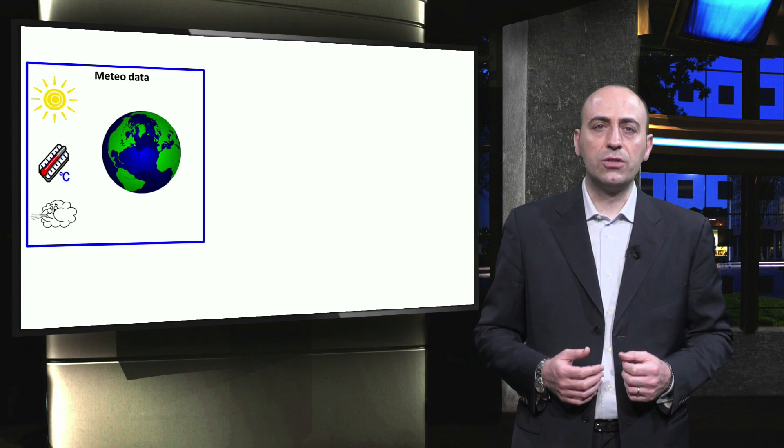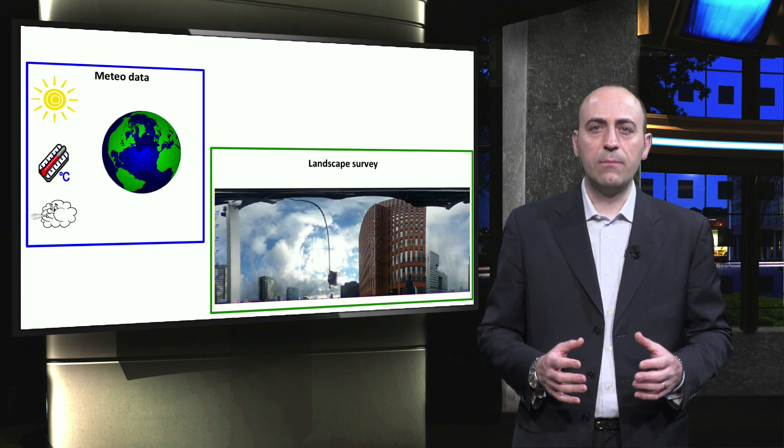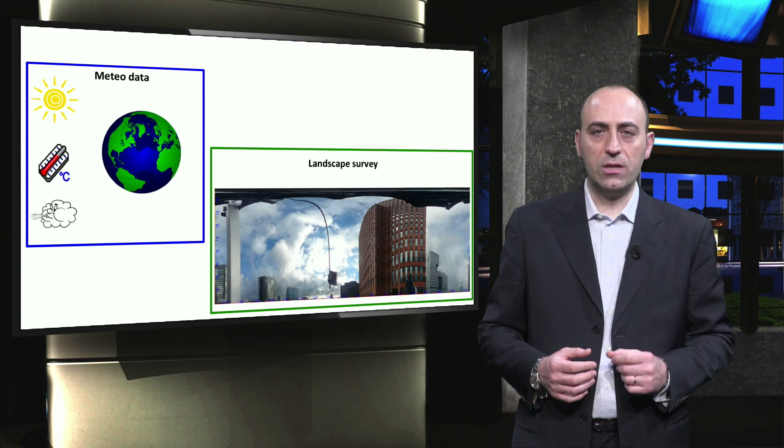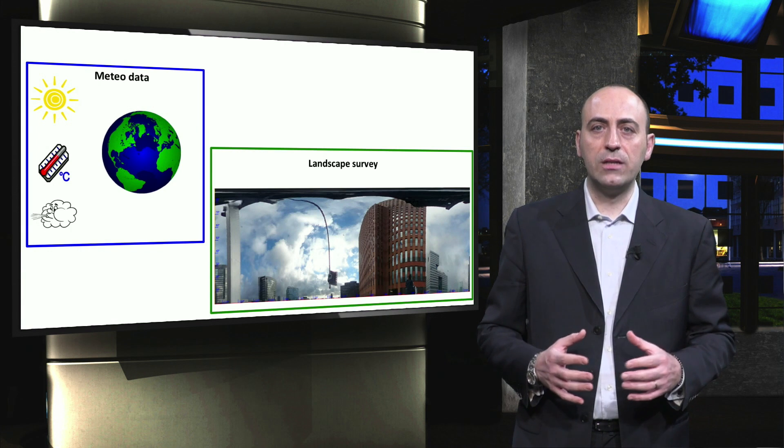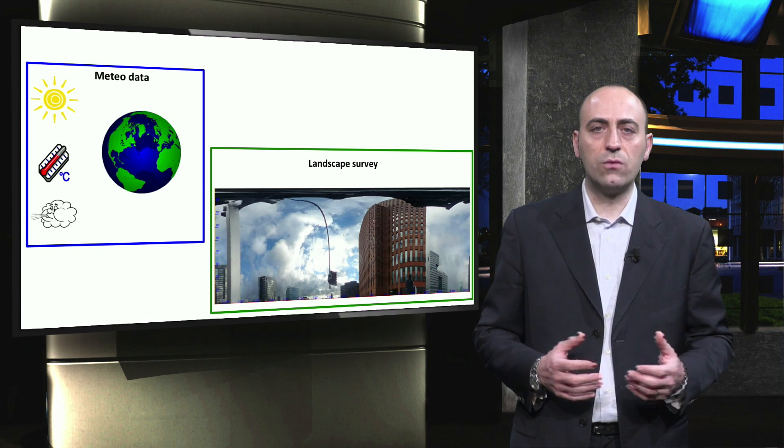An accurate energy yield prediction requires more than just the local meteorological data. Each system requires a detailed landscape survey. The location can be partly shaded due to the surrounding landscape such as trees or buildings.